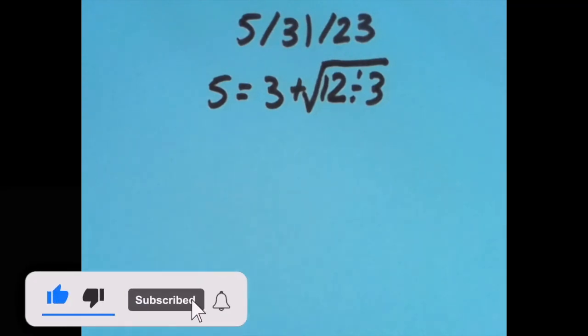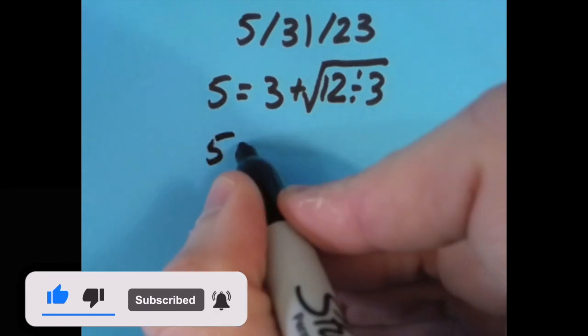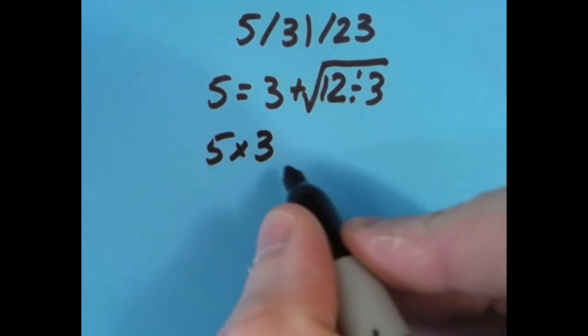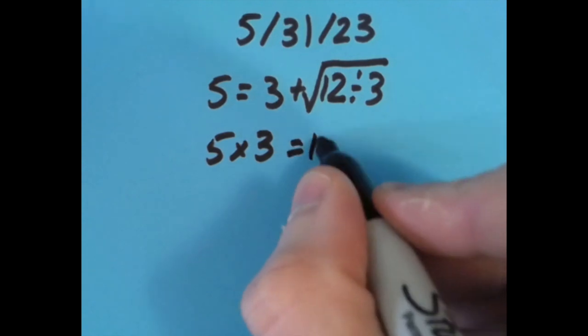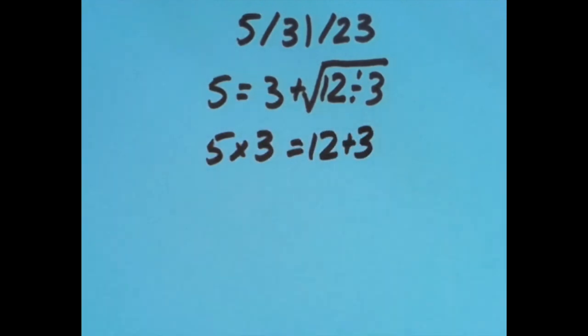But I did try it some other ways with the equal sign in different spots for fun. And here with the equal sign after this 3, I said 5 times 3 is 15, and so is 12 plus 3, so that worked out really nicely.